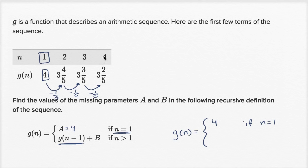One way to think about it, if we were to go the other way, we could say, for example, that g of four is equal to g of three minus one-fifth. You see that right over here. g of three is this. You subtract one-fifth, you get g of four.